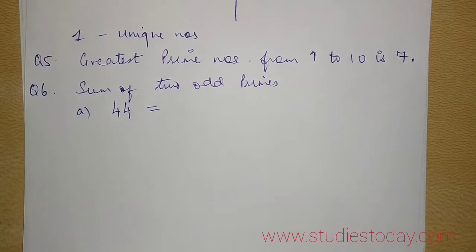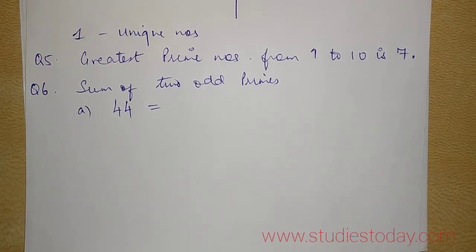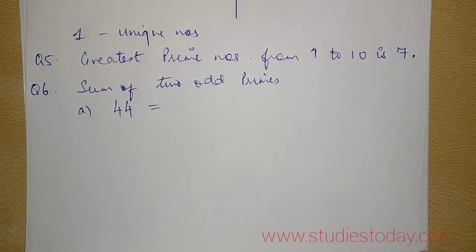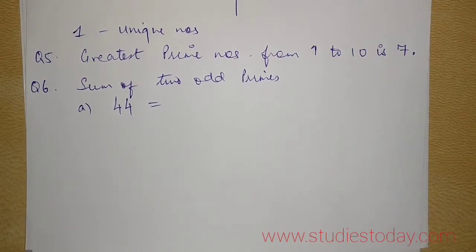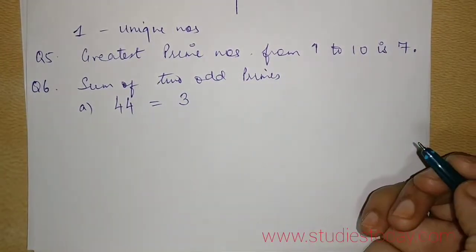I have to write it as sum of 2 odd primes. The first number in question is 44. Now children, here, one is a hit and trial method, one is a logical method. It depends how much your memory works. Now 1 you cannot take as it is a unique number. Number 1 we cannot take. So the first odd prime number that I start with is 3.